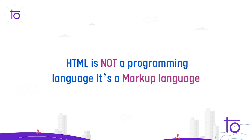There is a major difference between markup language and programming language. Students generally refer to HTML as a programming language, but HTML is not a programming language — it's a markup language. Programming languages are those that help you perform mathematical operations, calculations, or processing. But markup languages help you design the basic structure of your website. Examples of programming languages are C, C++, and Java, whereas markup languages like HTML define the structure, the base, and the backbone of web pages.